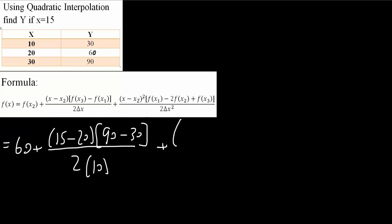Plus x minus x2. X again is 15, that is what we're trying to solve for. 15 minus x2 which is going to be 20, squared, times fx1 which is 30,